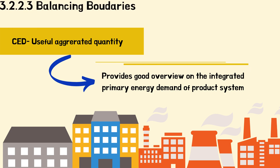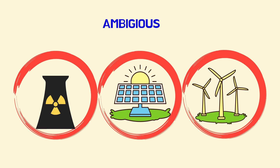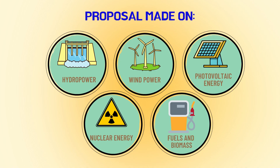Now we would like to talk about balancing boundaries. The CED is a very useful aggregated quantity which provides a good overview of the integrated primary energy demand of a product system. However, it has been argued that the determination of cumulative energy demand in the case of certain forms of primary energy — such as nuclear energy, solar energy and wind energy — is ambiguous. Proposals are made for hydropower, wind power, photovoltaic energy, nuclear energy, and fuel and biomass. This is important because, from the point of view of life cycle assessment, every specification must keep an eye on systems thinking and awareness to achieve economic management and a lifestyle closer to the required sustainability.